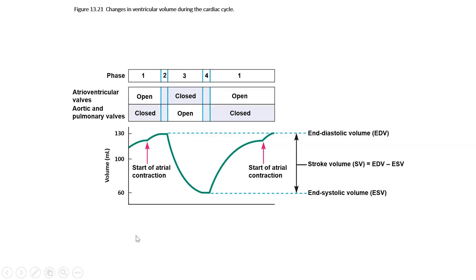Here is a graph that represents that. The total filling volume is 130 milliliters, and we record that EDV at the end of phase one. About 54% of that is ejected during phase three, taking us back down to about 60 milliliters — the end systolic volume, recorded at the end of phase three. There are 60 milliliters of blood left in the ventricle because the heart doesn't actually empty. It only empties about 54%, which is about 70 milliliters. Then it fills again, taking us right back up to our end diastolic volume, and that cycle repeats.